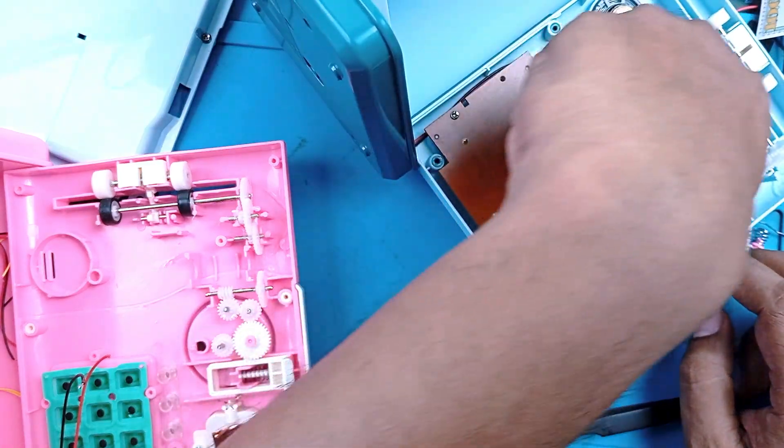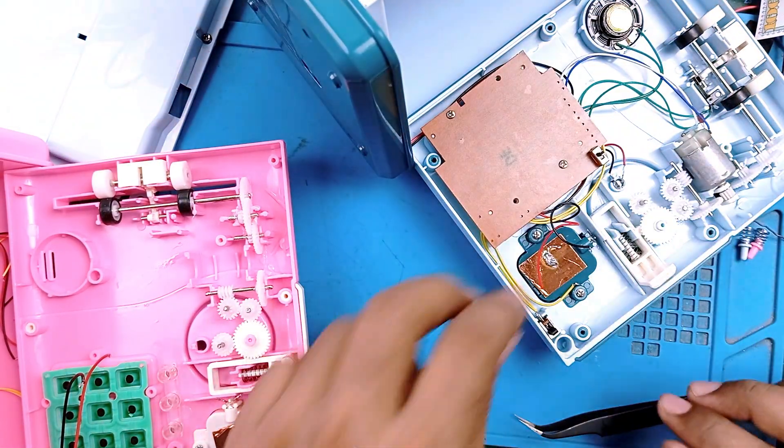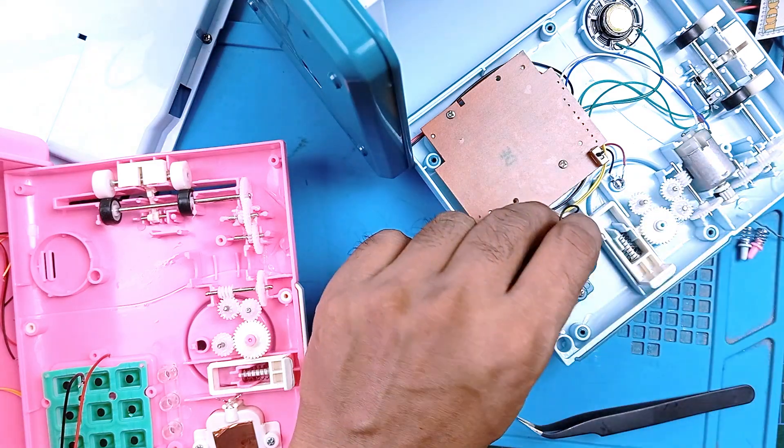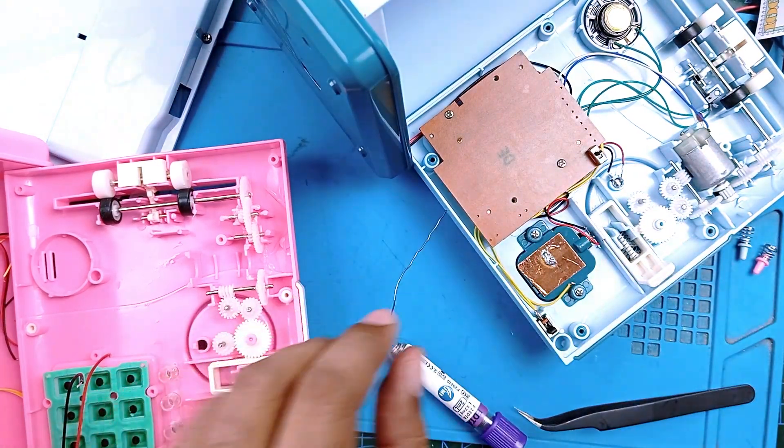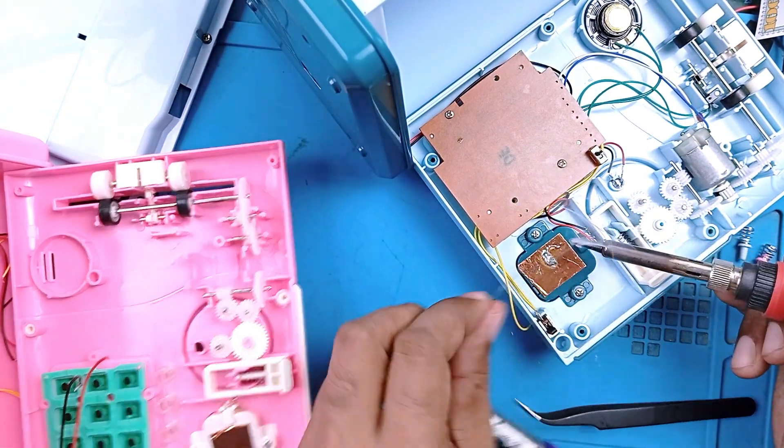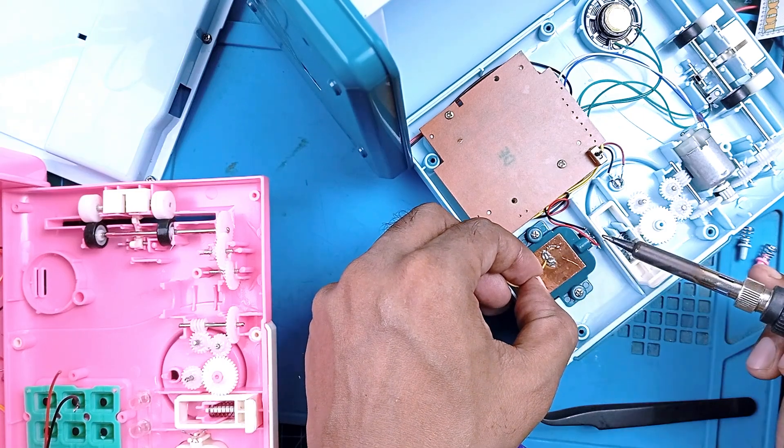This LED will go to this hole and left is negative and right one is positive. There is another solder joint we have to... so finally the sensor is connected.